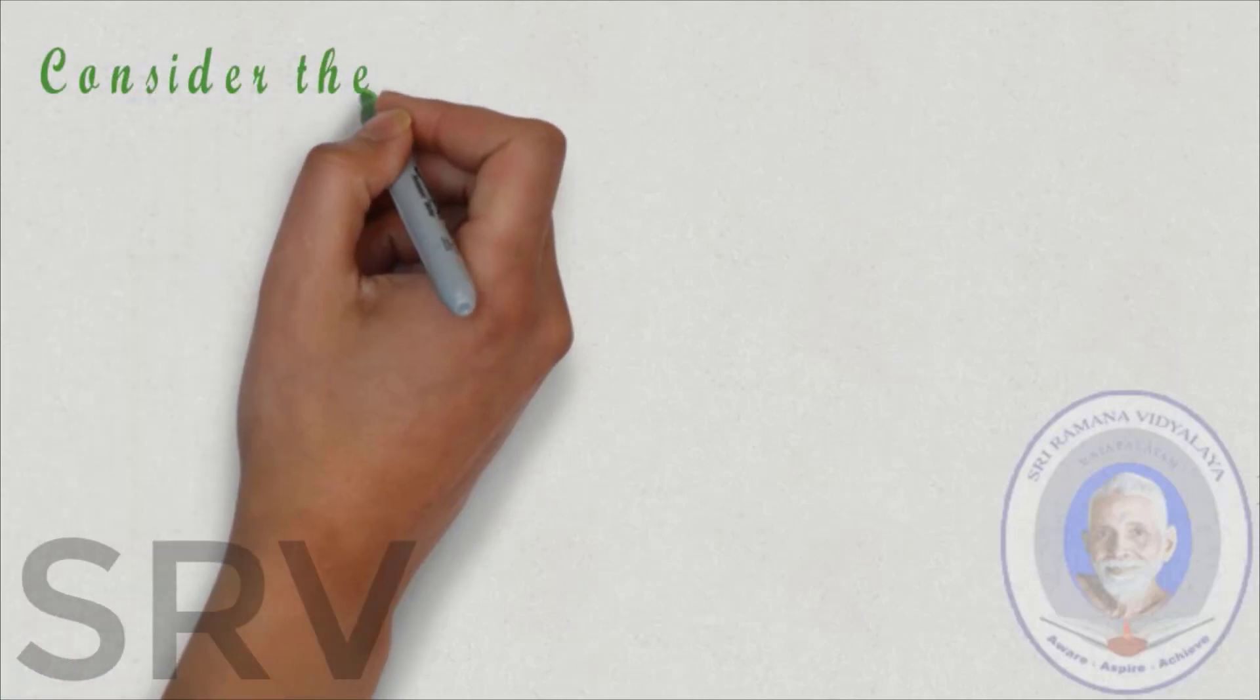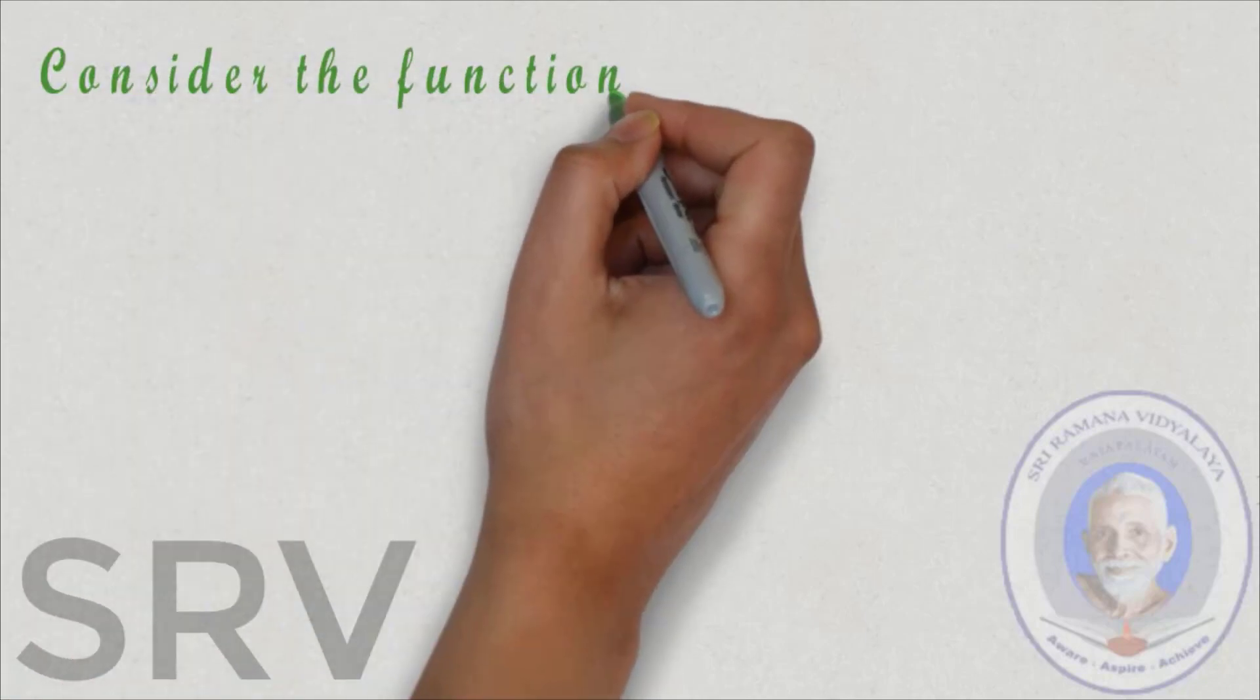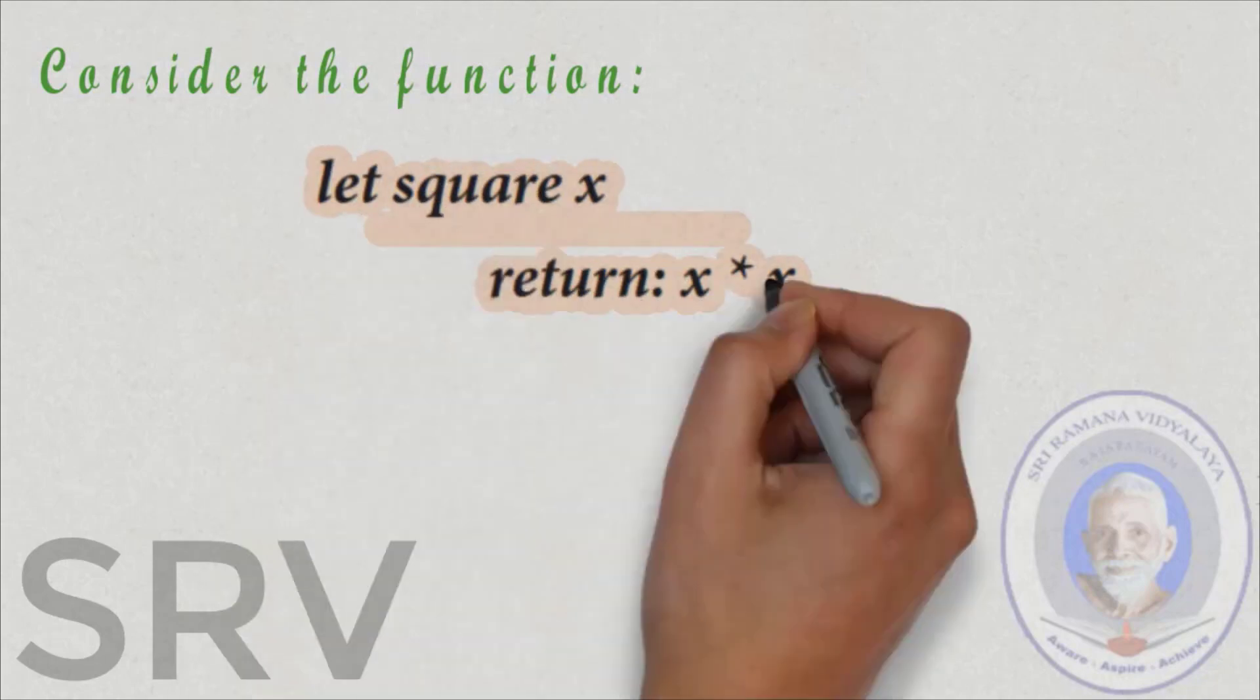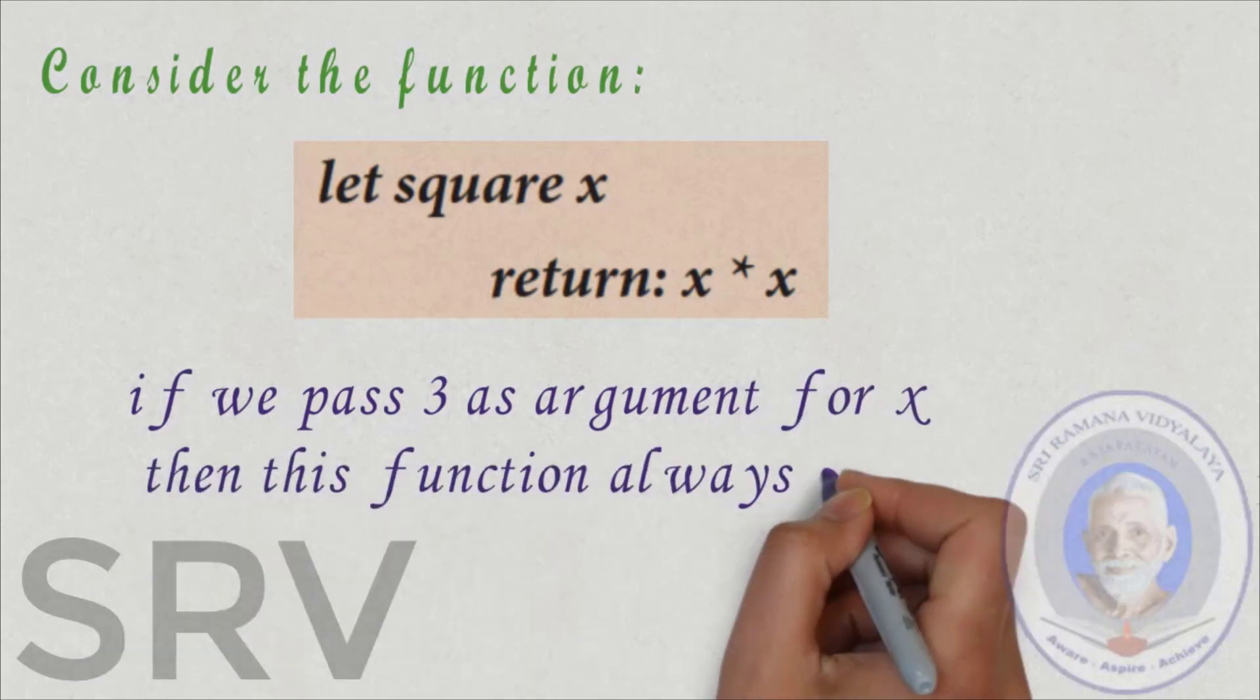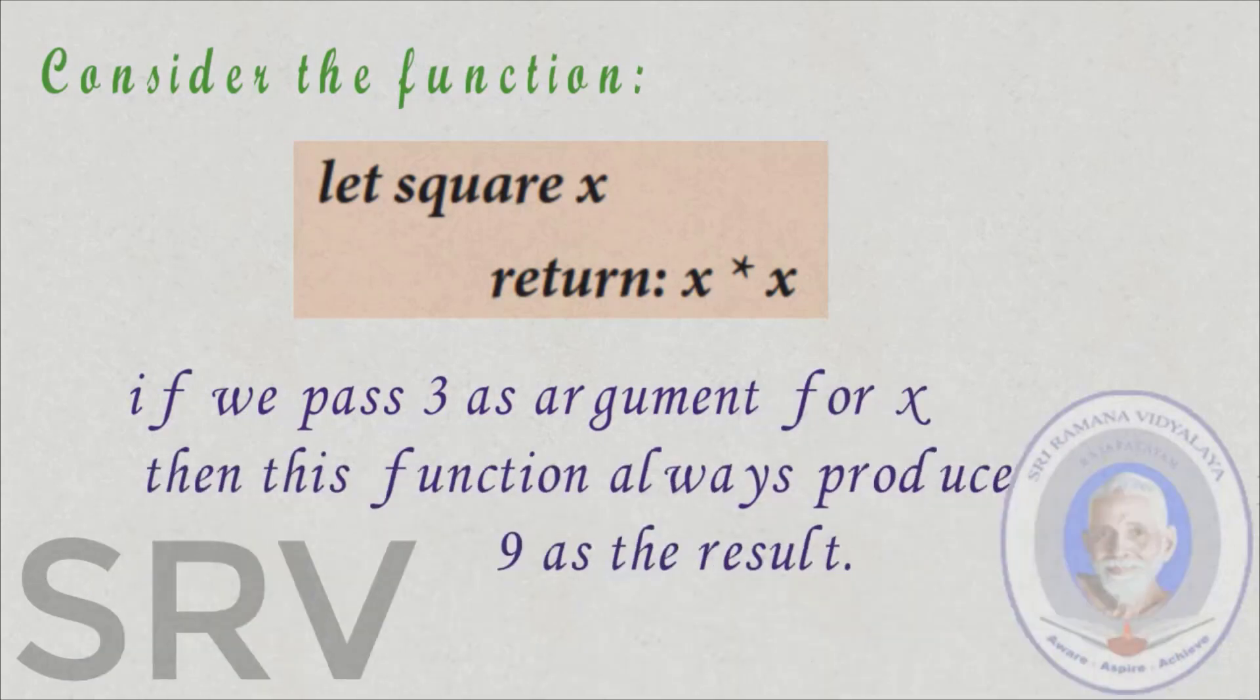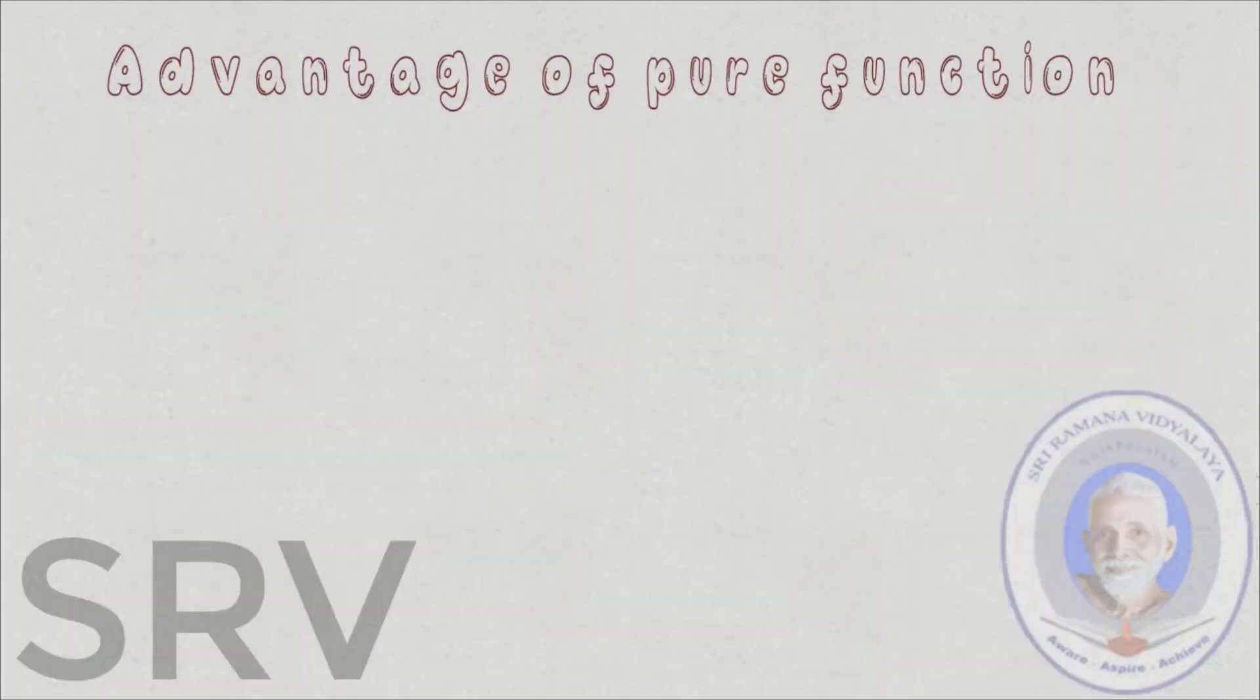Consider the following function. Let square x return x into x. If we pass 3 as argument for x, then this function always produce 9 as result each time. Let's see the advantage of pure function.